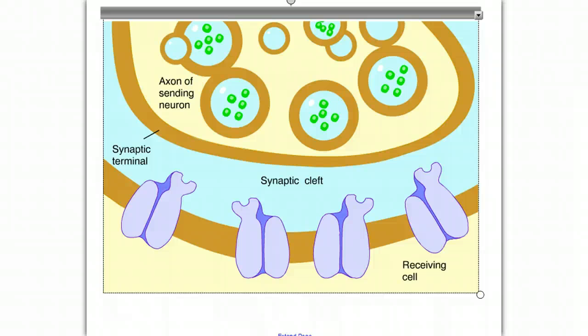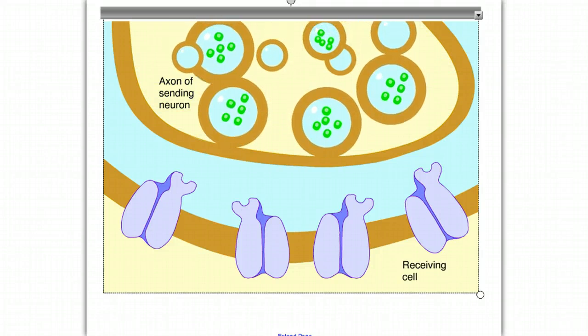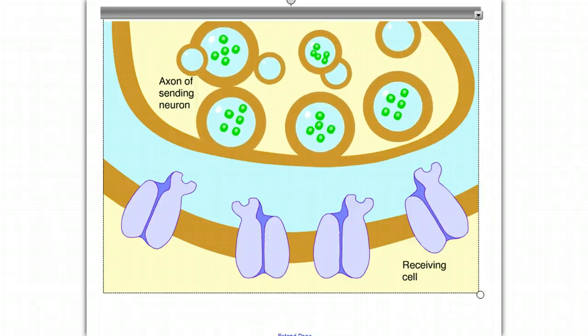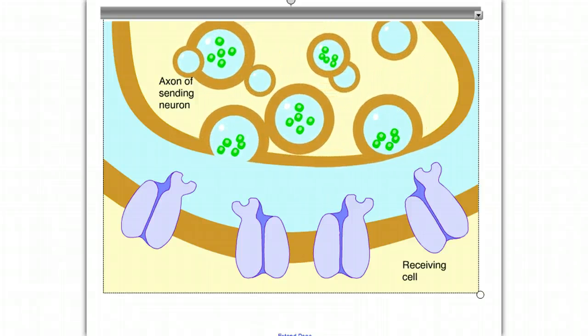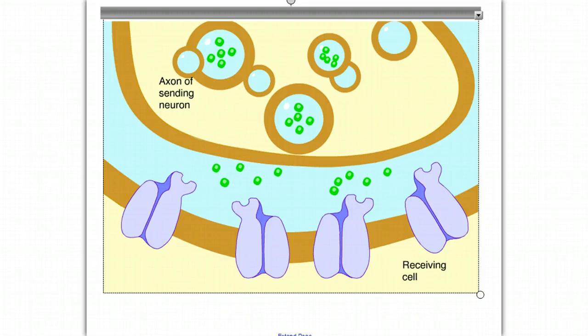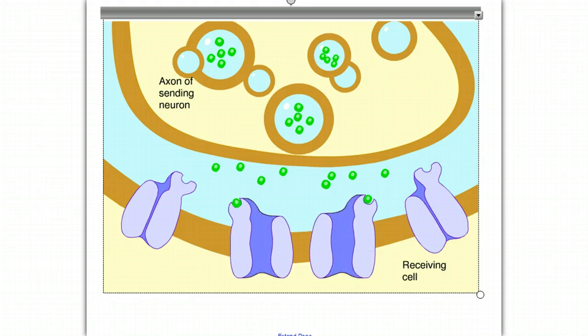An action potential arrives at the end of the axon of the sending cell. This causes chemical changes that make vesicles containing a chemical called a neurotransmitter fuse with the plasma membrane. The neurotransmitter molecules spill out into the synaptic cleft, diffuse across, and bind to the receptors on the receiving cell's membrane. The binding of neurotransmitters to receptors causes the attached ion channels to open. Depending on the type of neurotransmitter, receptors, and channels involved, this may excite or inhibit the receiving cell.